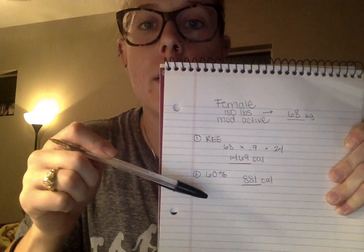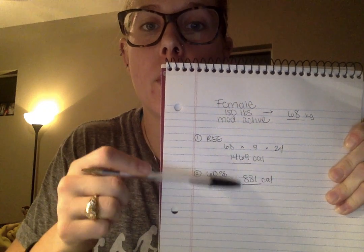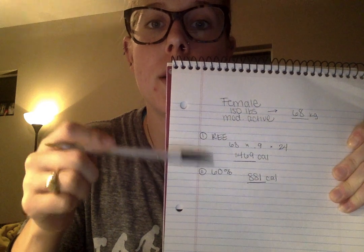I'm going to take 60% of my resting energy expenditure. So I take 1469 and multiply it by 0.6 for 60%, which gives me 881.4 — I'll round that to 881. That is our expenditure for activity level. Now I add the resting energy expenditure (1469) and the activity expenditure (881) together: 1469 plus 881 gives me 2,350.